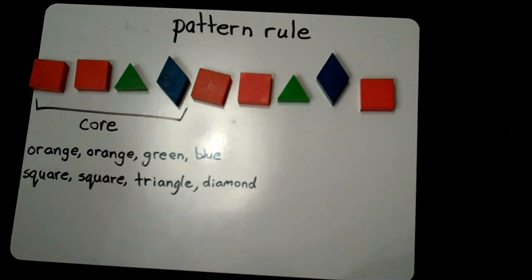We can also show a pattern rule by using letters. We use the letters of the alphabet in order, so we assign a letter for each unique element.